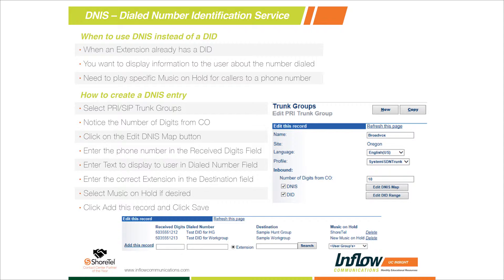Another nice use for DNIS is to specify music on hold. Traditionally in your ShoreTel system, you've had one music on hold for your whole system or all of your locations. Using DNIS, we can actually say: when this phone number comes in, go to this extension and play this music on hold file when they're placed on hold — any time a user places them on hold or we're queuing up a call. We can control the music on hold on a per-call basis.